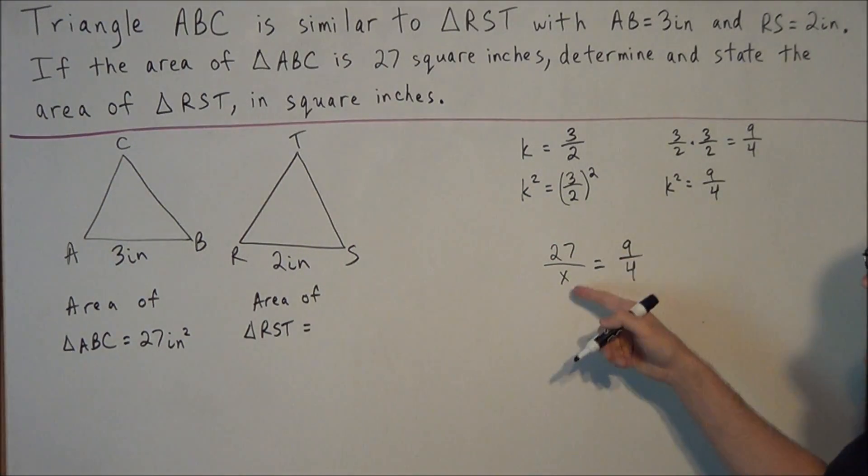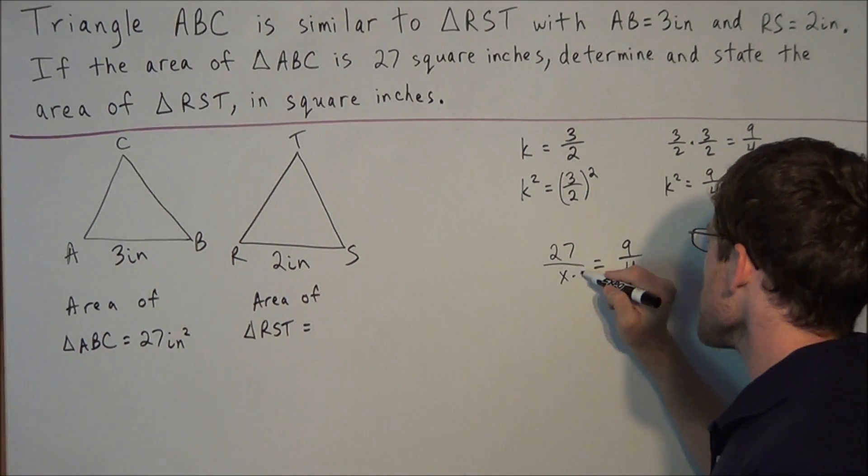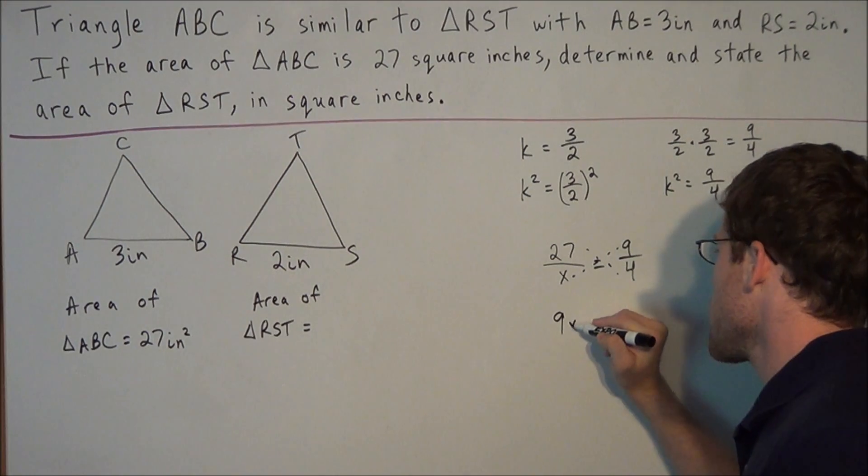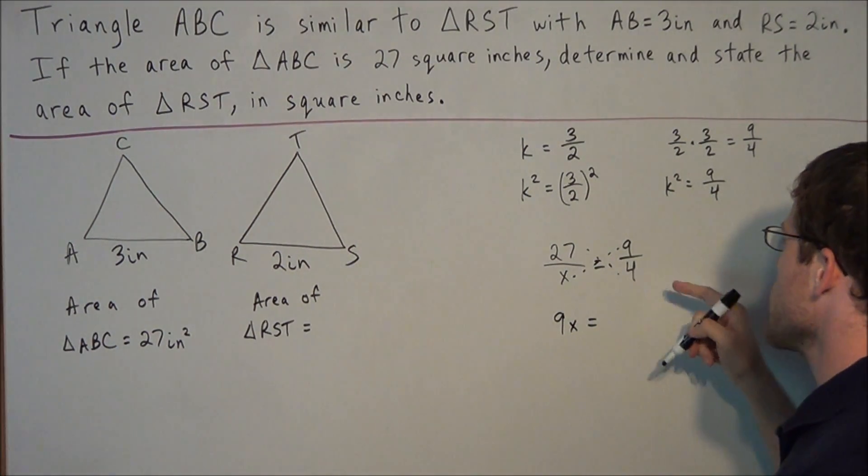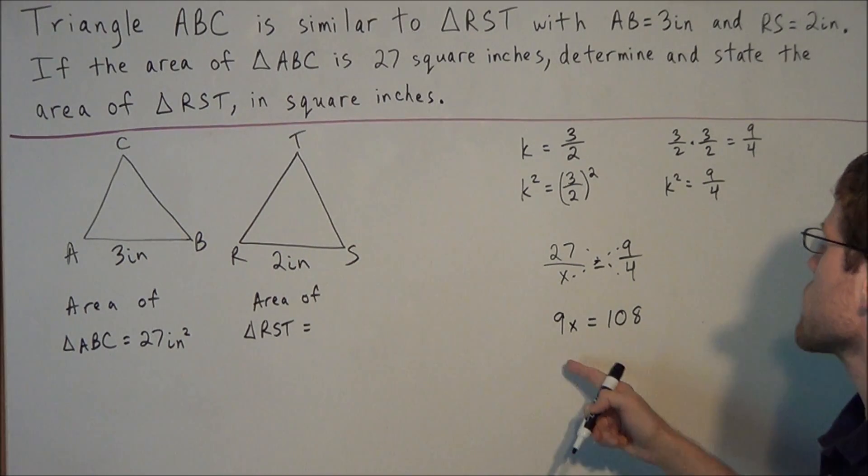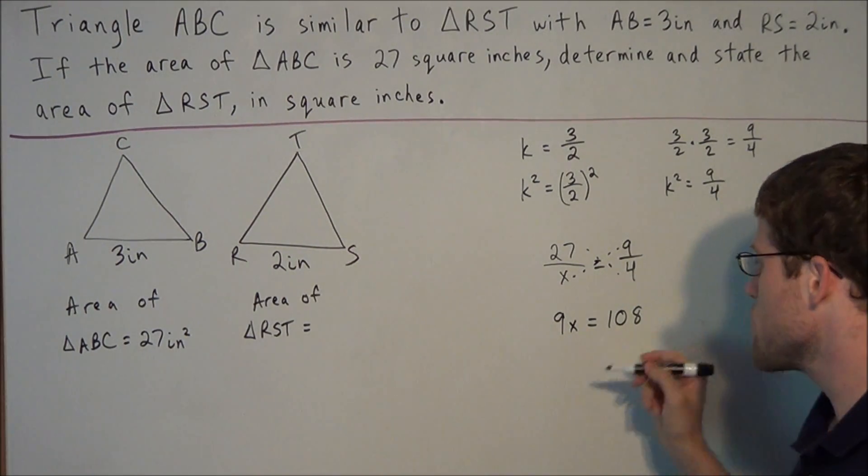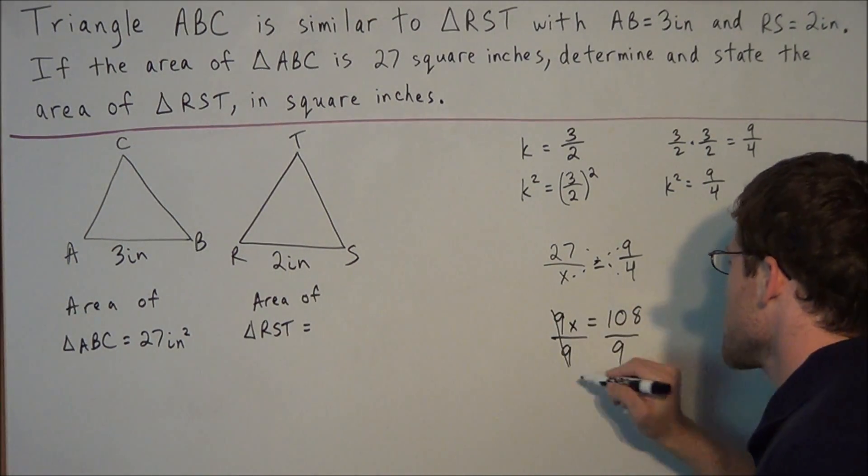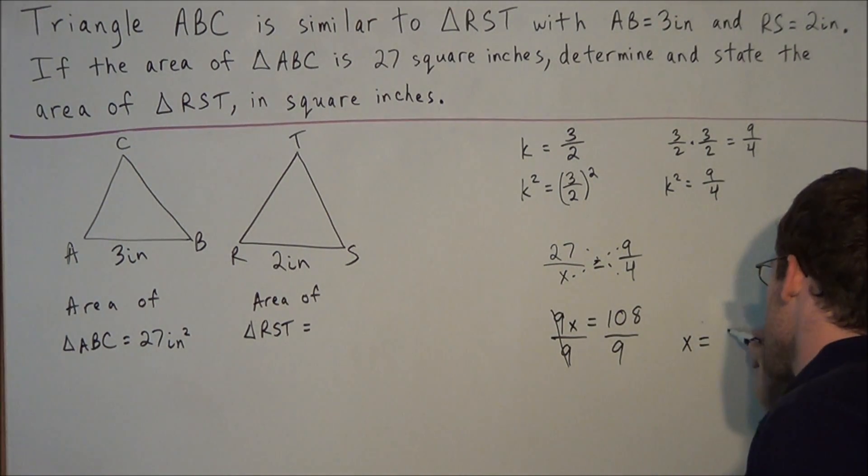So now to solve for x, all we need to do is cross multiply. And we have 9x equals, and 27 times 4 is 108. So now to solve for x, all we need to do is divide both sides by 9. And this gives us x equals 12.